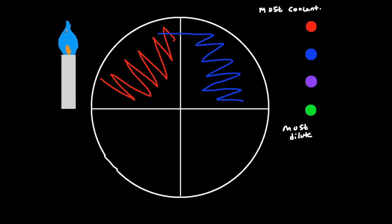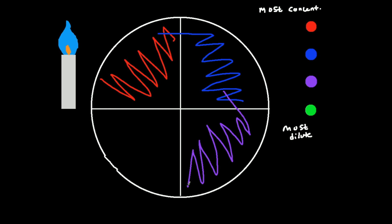Then I put the loop back in the flame, sterilize it, wait 10 seconds to make sure it's cool enough, and do the same thing: drag my loop through a small part of the previous quadrant and then zigzag in the third quadrant. Then I stick my loop back in the flame, sterilize it, take it out, wait 10 seconds, drag the loop through one small part of the previous quadrant, and then zigzag into the fourth quadrant — and then you're done.